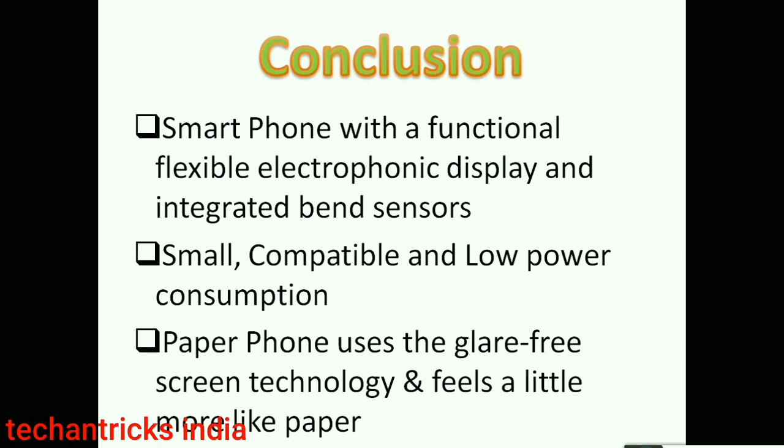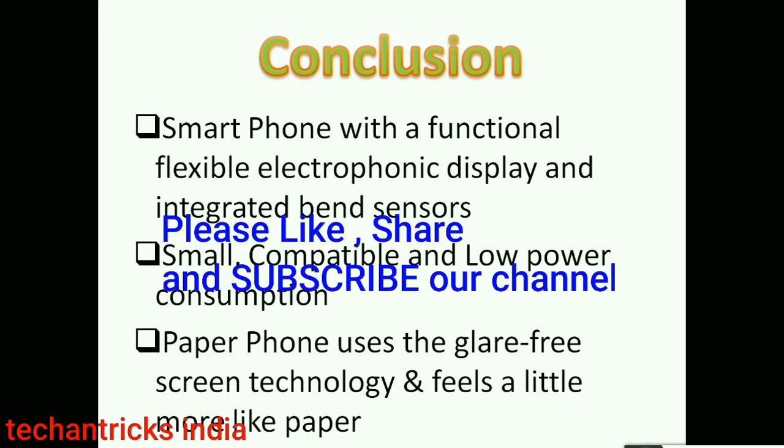Conclusion: a smartphone with a flexible electronic display and integrated bend sensor is a small, compatible, and low power consumption device. The paper phone uses glare-free screen technology and feels a little more like paper. Please subscribe to our channel for more information on new technologies. Thank you.